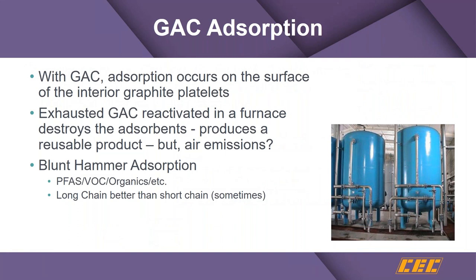Typically you'll see those systems in a lead-and-lag approach where you have a primary cylinder followed by a secondary polishing unit. When the first cylinder gets expended, it's switched from lag to become the lead. The other cylinder that previously was the lead can be removed and its contents regenerated — the activated carbon can be reactivated in a furnace or incinerated. I call this a blunt hammer approach because it removes virtually all PFAS and VOCs. It's better for long chain than short chain, as longer chain PFAS constituents can knock off shorter chain ones.